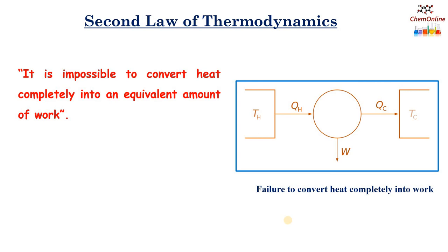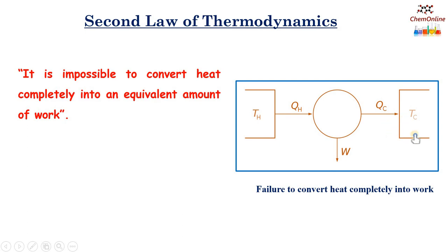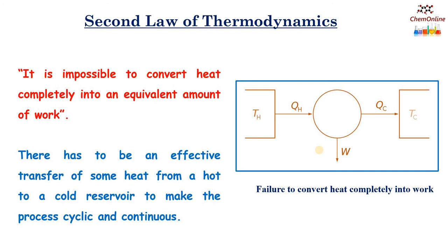Carnot's second theorem states: no heat engine can be more efficient than a reversible one operating between the same two temperature limits. On the basis of Carnot's cycle, we can state the second law of thermodynamics: it is impossible to convert heat completely into an equivalent amount of work. In all real heat engines, some heat absorbed from the source is discarded into the sink at a lower temperature, and only a portion is converted to work. There has to be an effective transfer of some heat from a hot to a cold reservoir to make the process cyclic and continuous. The second law of thermodynamics is a generalization expressing this practical failure to convert heat completely into work.